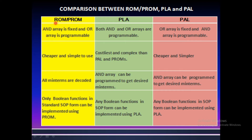In ROM and PROM, the AND array is fixed and the OR array is programmable. The gates which are fixed in case of ROM and PROM are your AND gates, whereas the OR gates are programmable — that is, the AND array is fixed and the OR array is programmable.